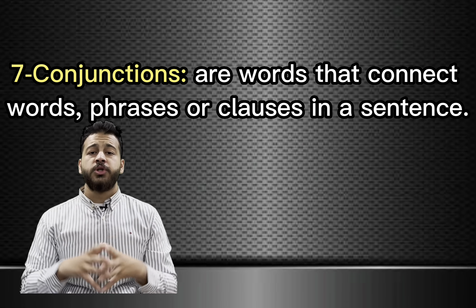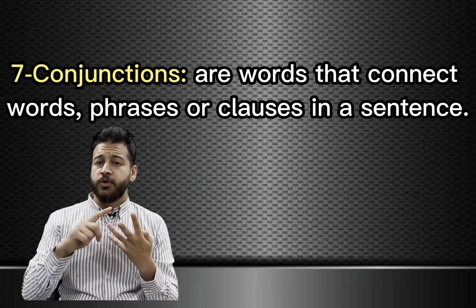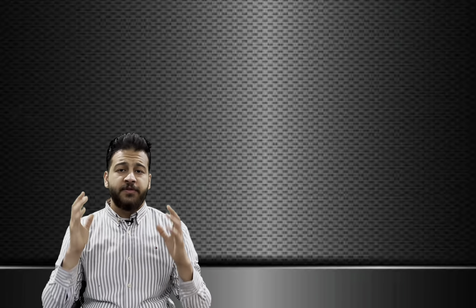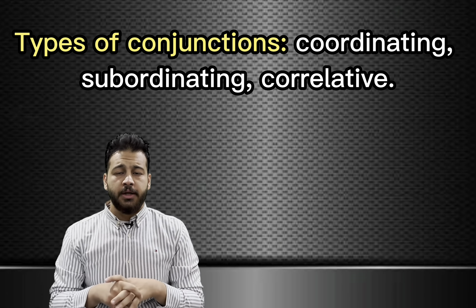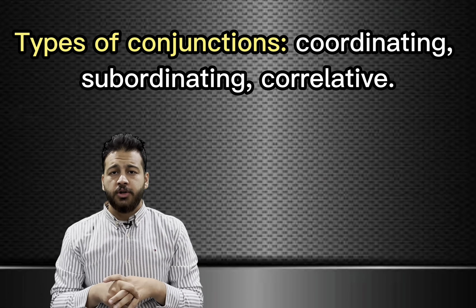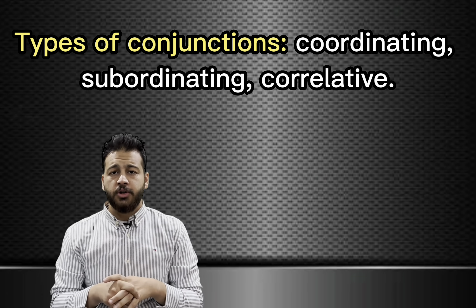Number seven: conjunctions. Conjunctions are words that connect words, phrases, or clauses in a sentence. There are many types of conjunctions like coordinating, subordinating, and correlative conjunctions, but today we're just introducing the word conjunction in general. Conjunctions include and, but, or, because, after, and many more. For example, in 'I went to school and I met my friends,' the word and joins two sentences together.